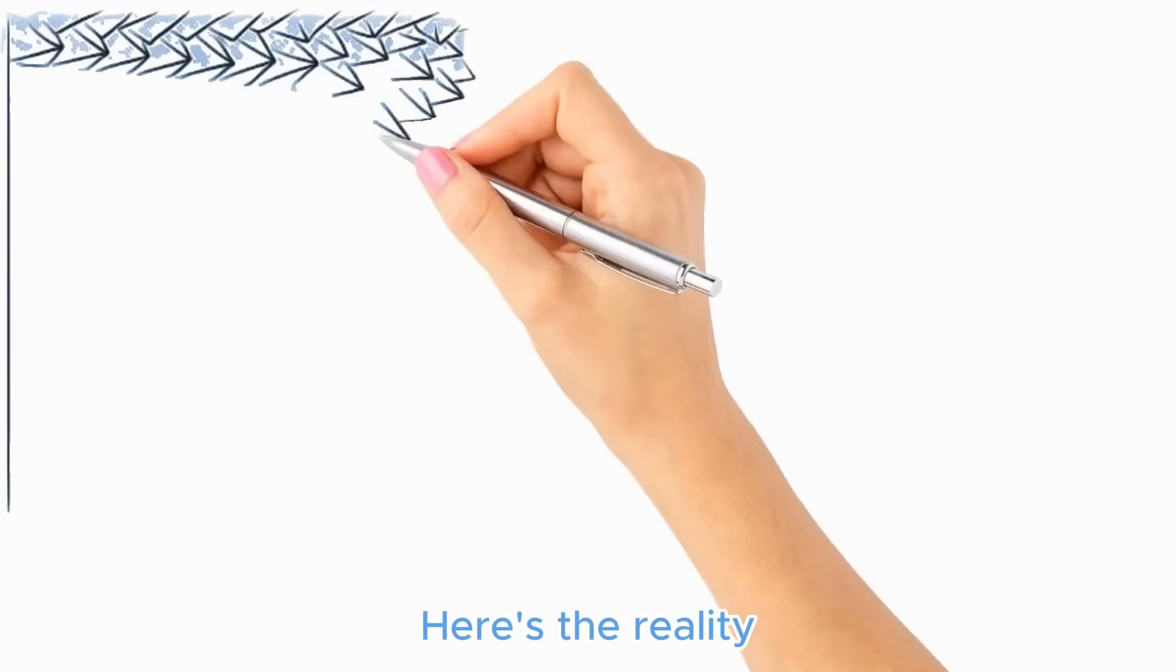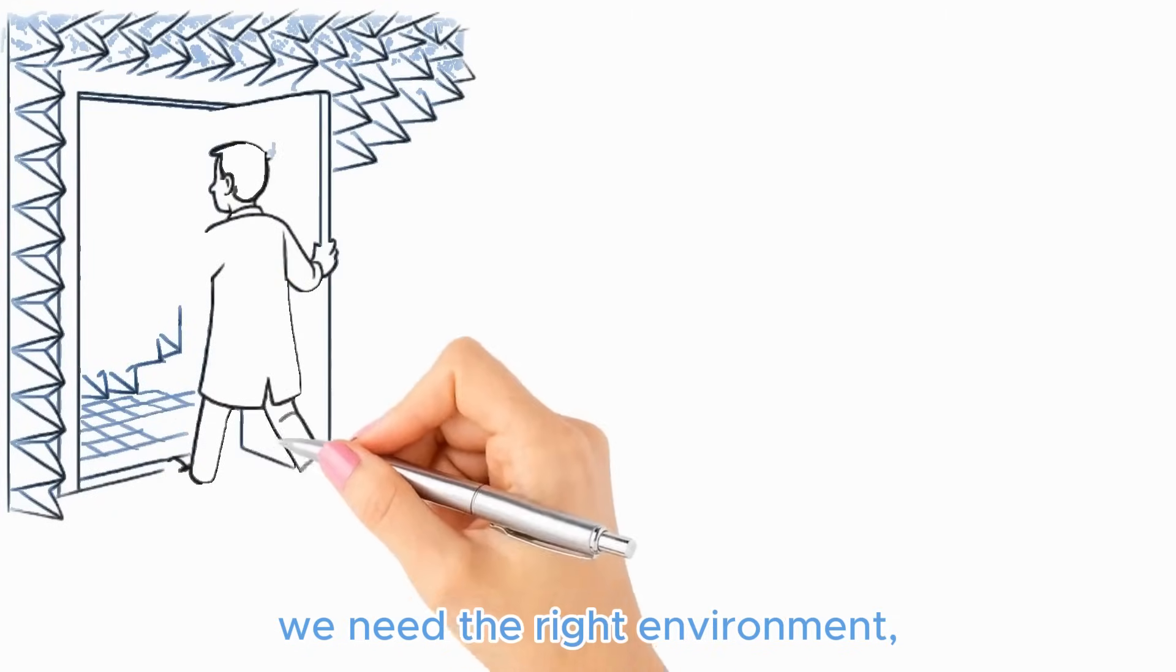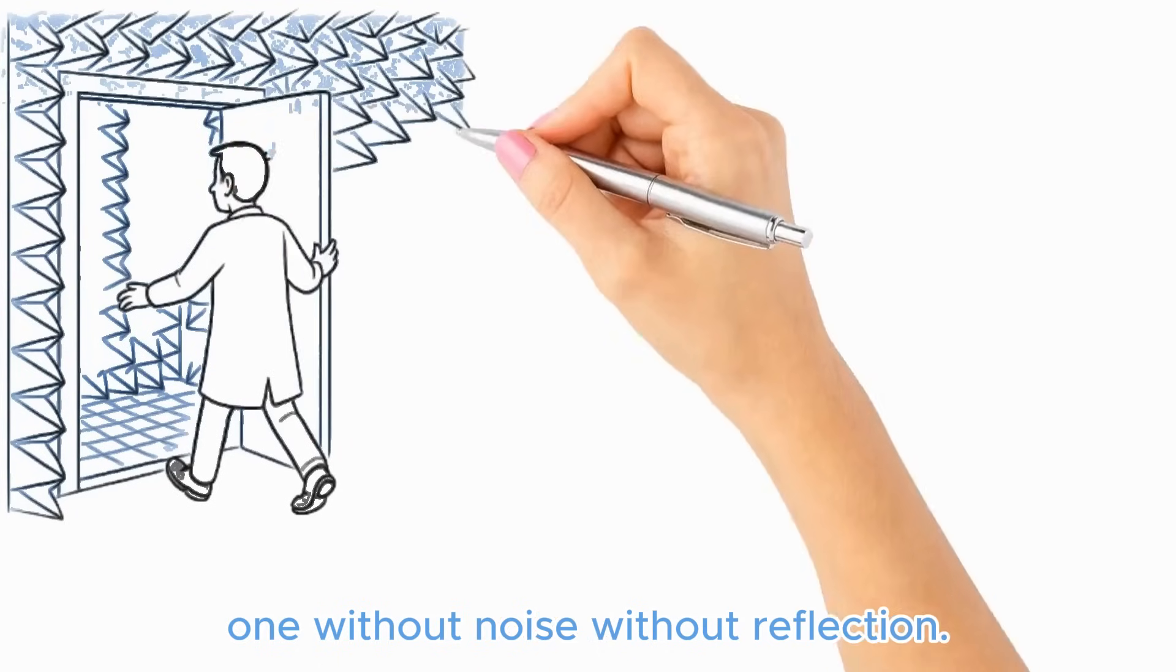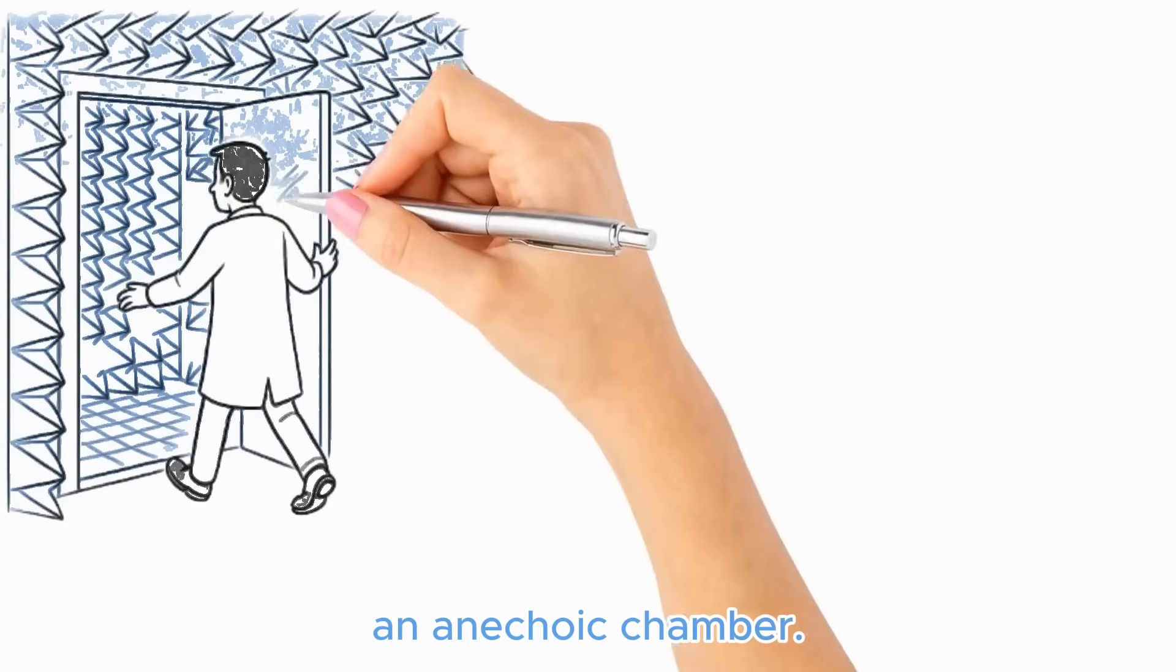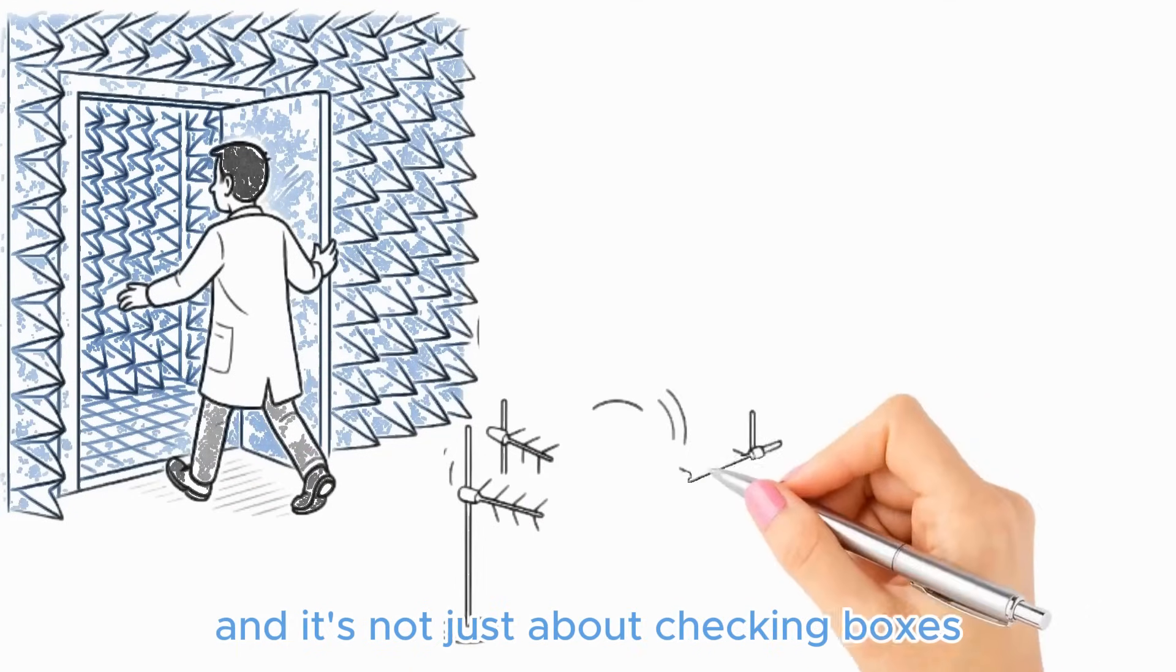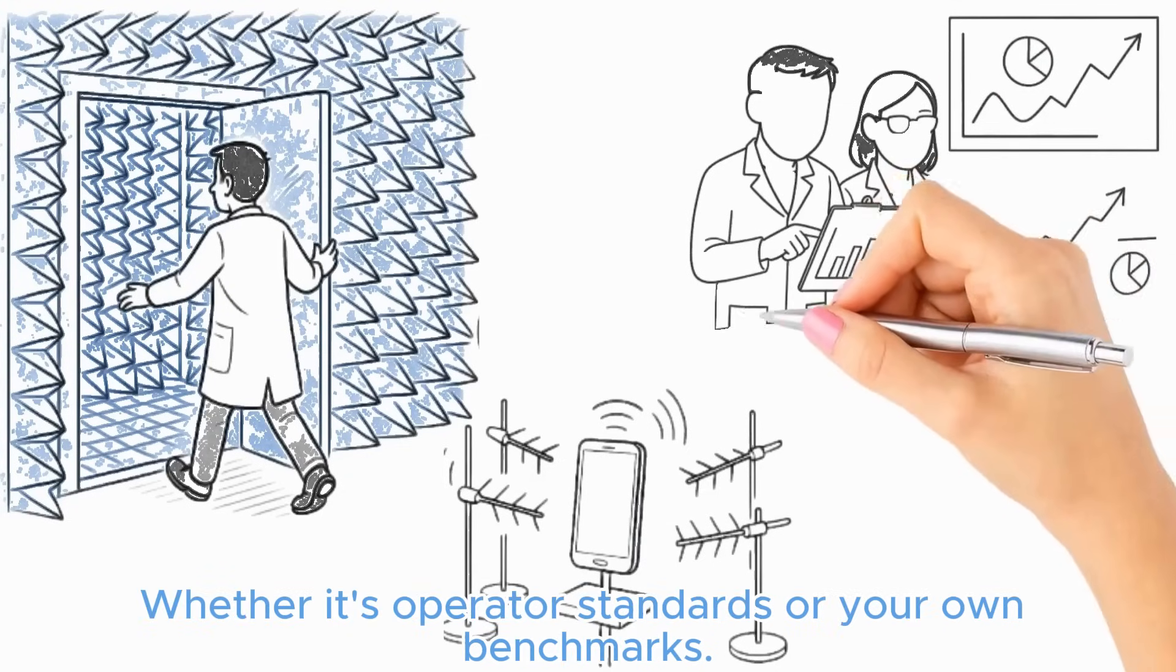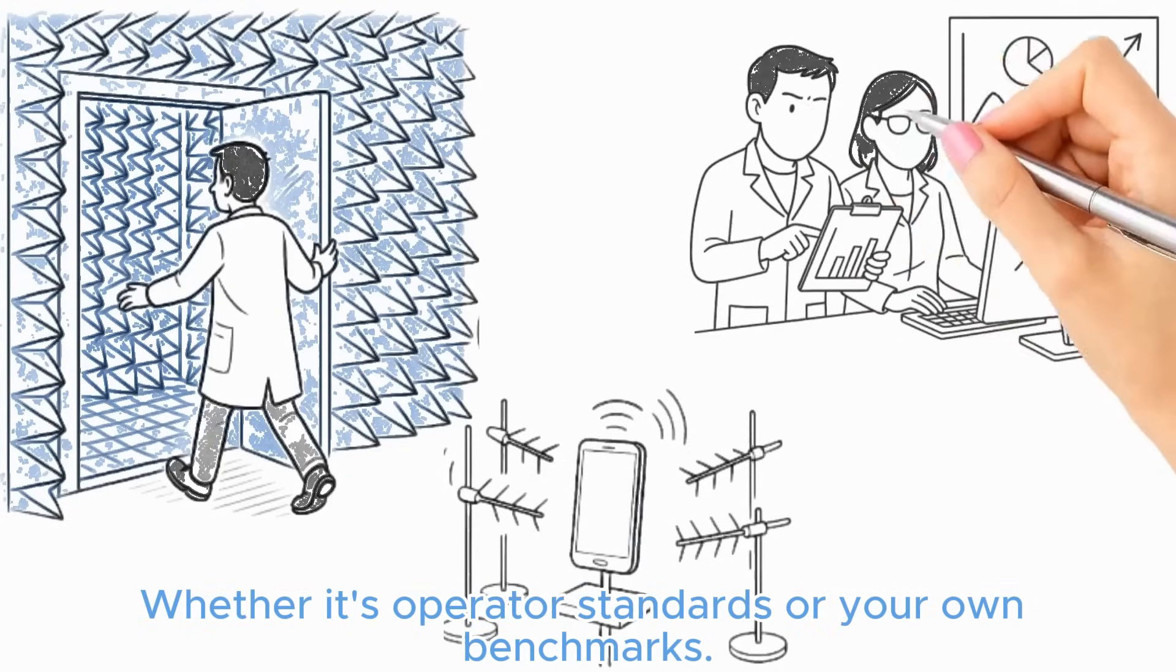Here's the reality. To truly understand antenna performance, we need the right environment. One without noise, without reflection. An anechoic chamber. We run tests across all the relevant bands. And it's not just about checking boxes. It's about making sure your device meets real-world expectations, whether it's operator standards or your own benchmarks.